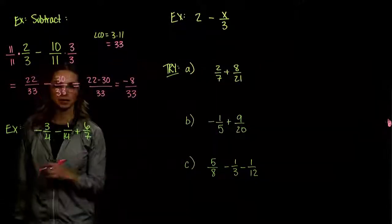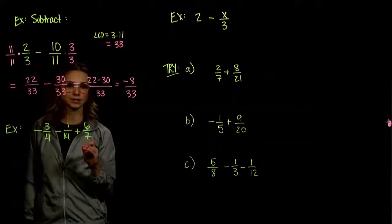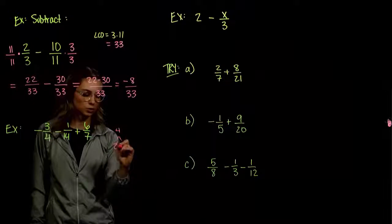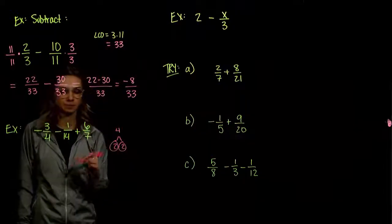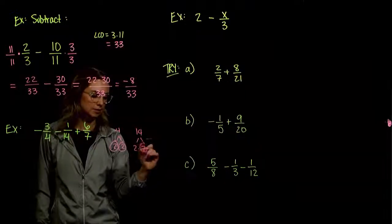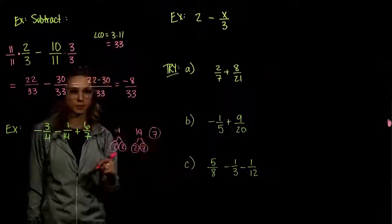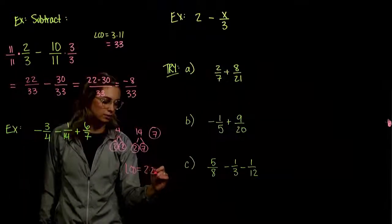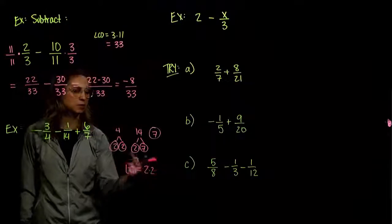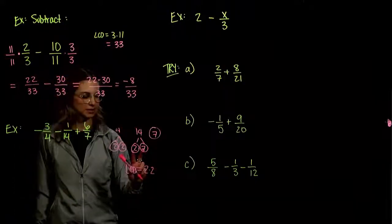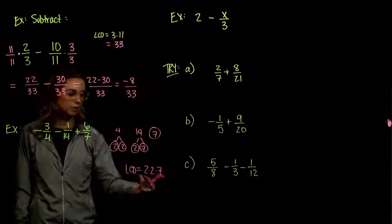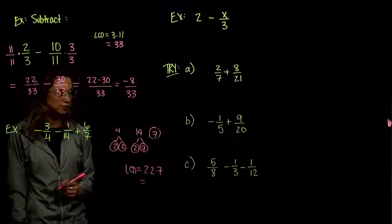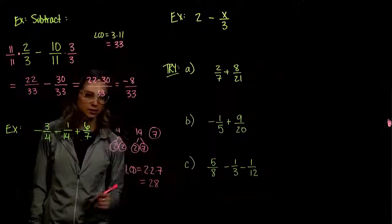Moving on: we want a common denominator between 4, 14, and 7. Let's take each and break them into their primes. 4 breaks up into 2 and 2, both prime. 14 breaks up into 2 and 7, both prime. And 7 is already prime. Building our LCD: starting with 4, we take two 2s into account. It also has to be divisible by 14, so what is our LCD missing that 14 has? A factor of 7. And we're not missing anything that the last term has. So 2 times 2 is 4, and 4 times 7 gives us 28 as our common denominator.